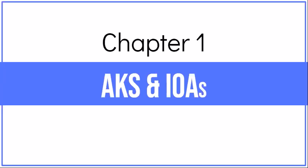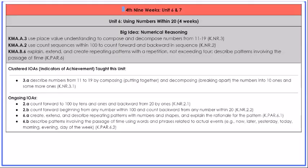Unit 6 has three AKS. AKS 3 is the primary AKS for this unit, while AKS 2 and 6 have been ongoing throughout the entire year. Under the AKS, you will find the Indicators of Achievement, or IOAs. We have also provided a state coding at the end of each AKS and IOA in parentheses, which you will use when looking up resources on the Georgia DOE website.